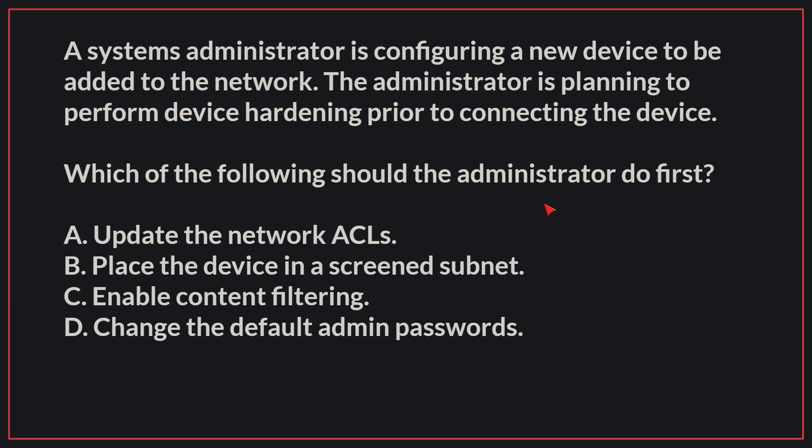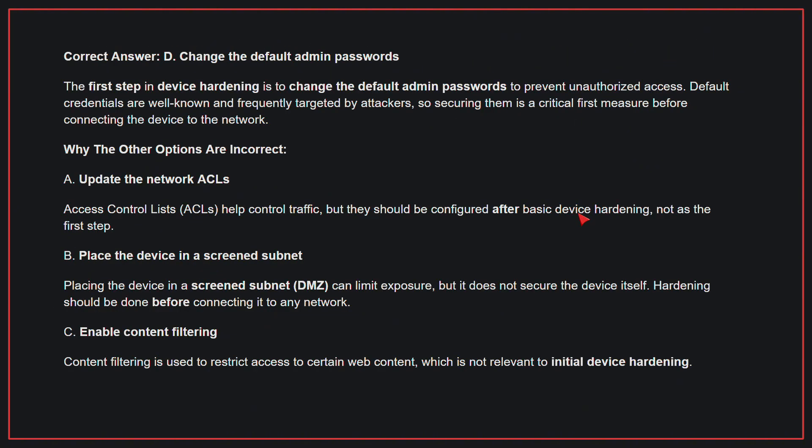A systems administrator is configuring a new device to be added to the network. The administrator is planning to perform device hardening prior to connecting the device. Which of the following should the administrator do first? The correct answer is D, change the default admin passwords. The first step in device hardening is to change the default admin passwords to prevent unauthorized access. Default credentials are well known and frequently targeted by attackers, so securing them is a critical first measure before connecting the device to the network.